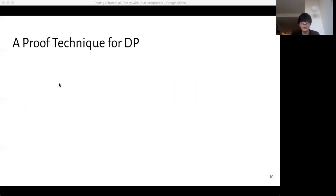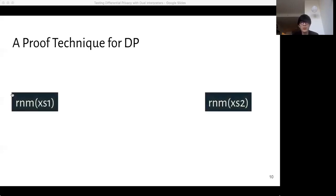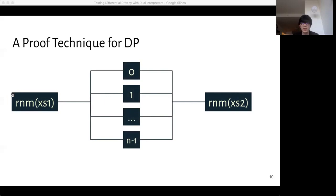Although the definition of differential privacy is quite complicated, experts have come up with a reasonable general proof technique that works on a large class of algorithms. The general idea is this: let's consider two runs of report noisy max on a pair of similar inputs. Because for this particular algorithm, we know it returns an index value into the input array, we know the range of possible outputs are 0 up to n minus 1, where n is the length of the input array. This proof technique requires that for each possible output index value i, we show that the probability of getting i under both distributions have multiplicative differences bounded by e to the epsilon.